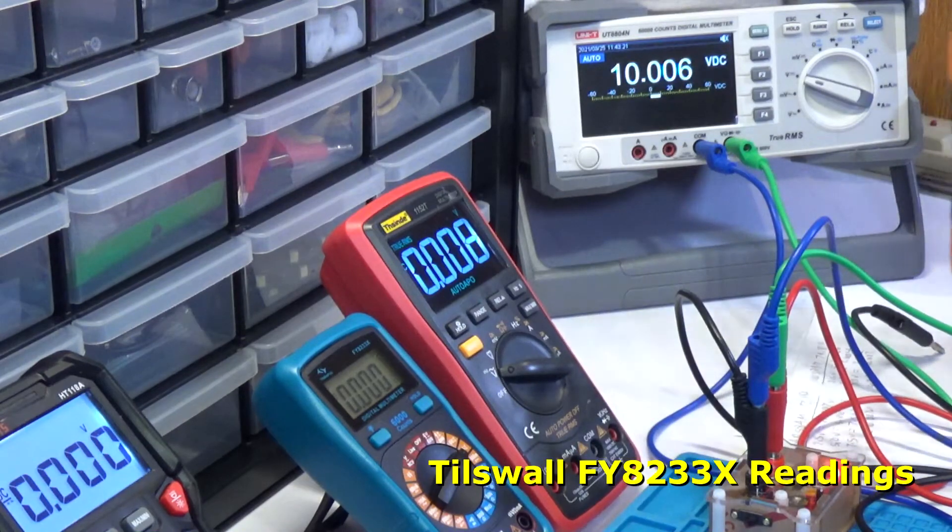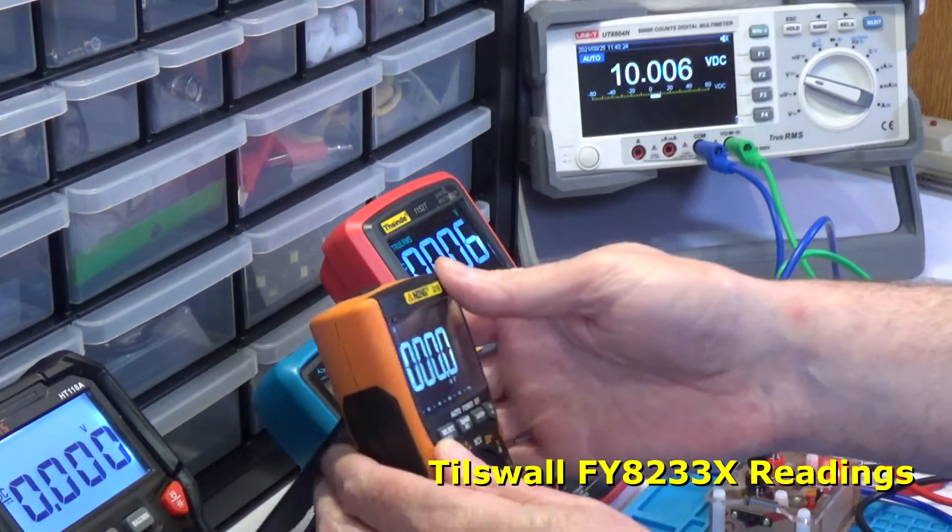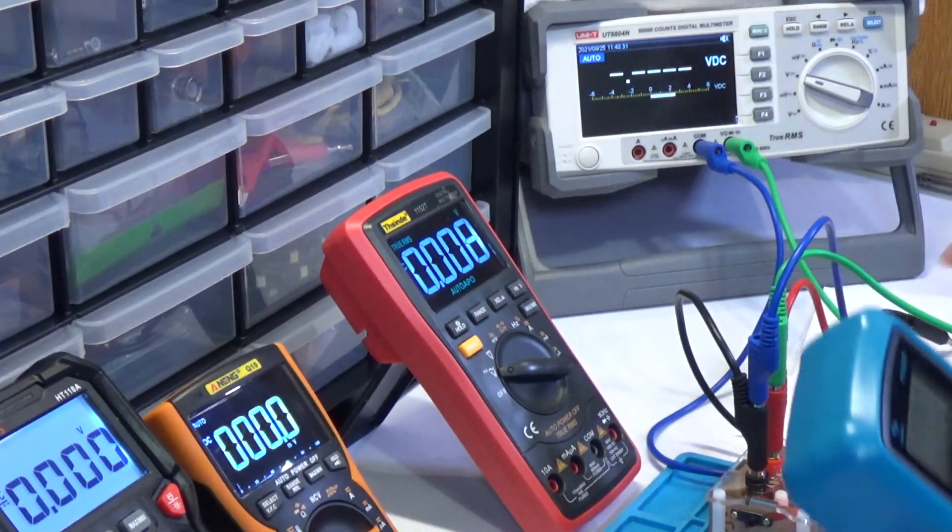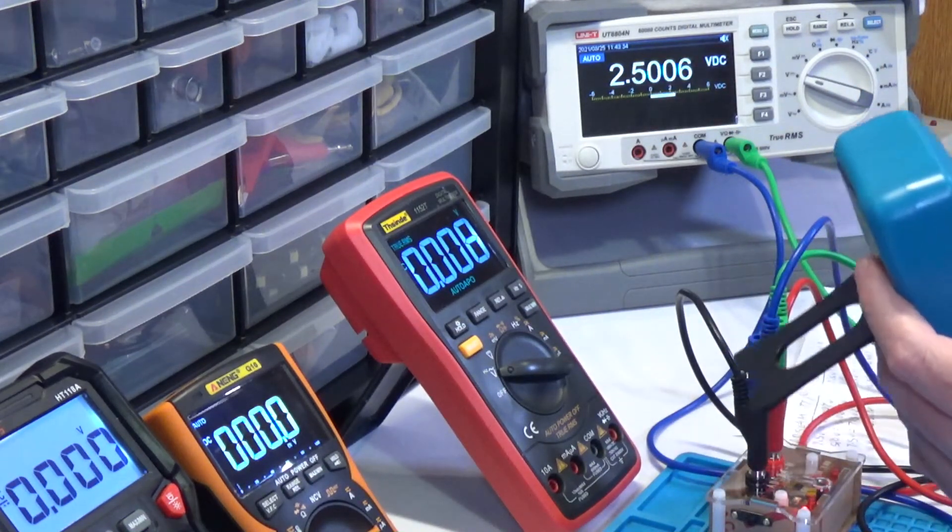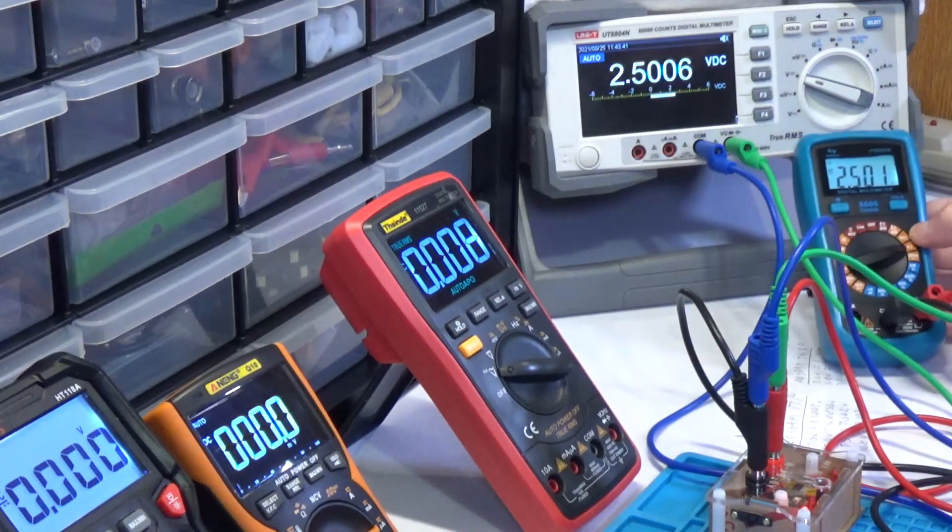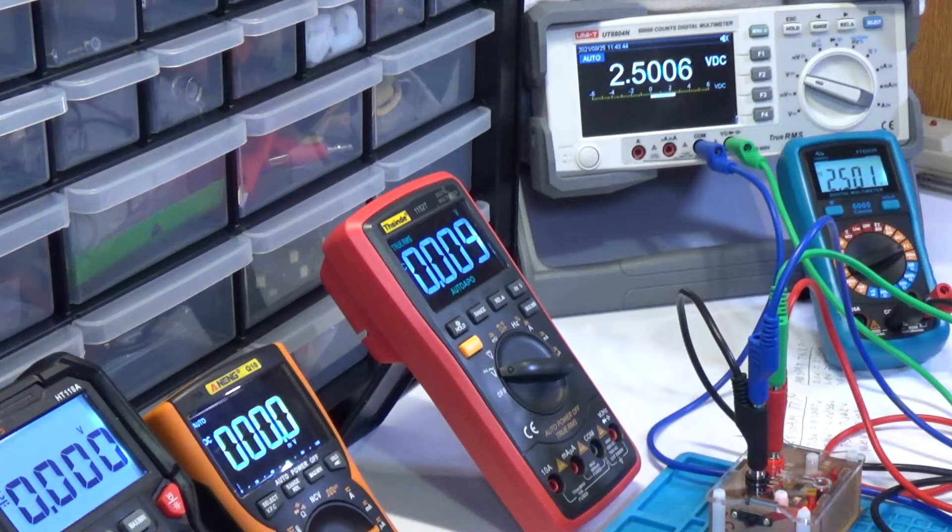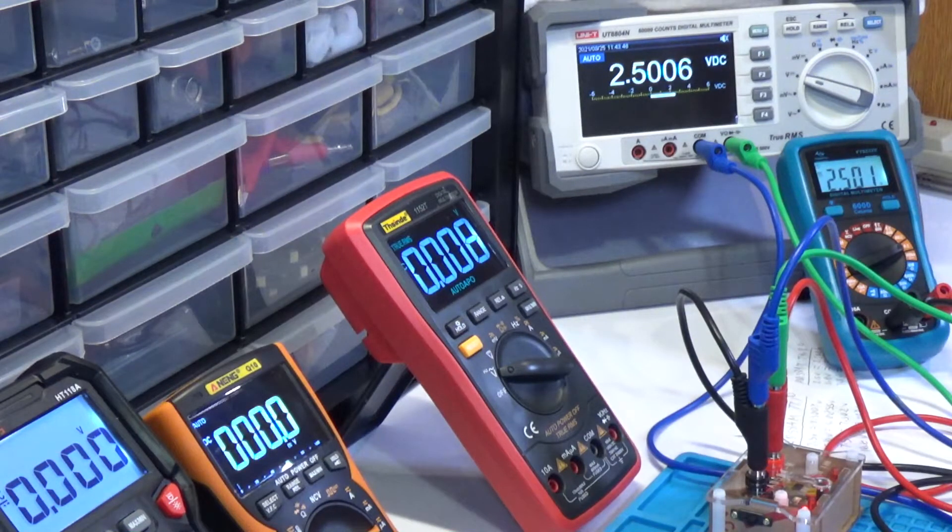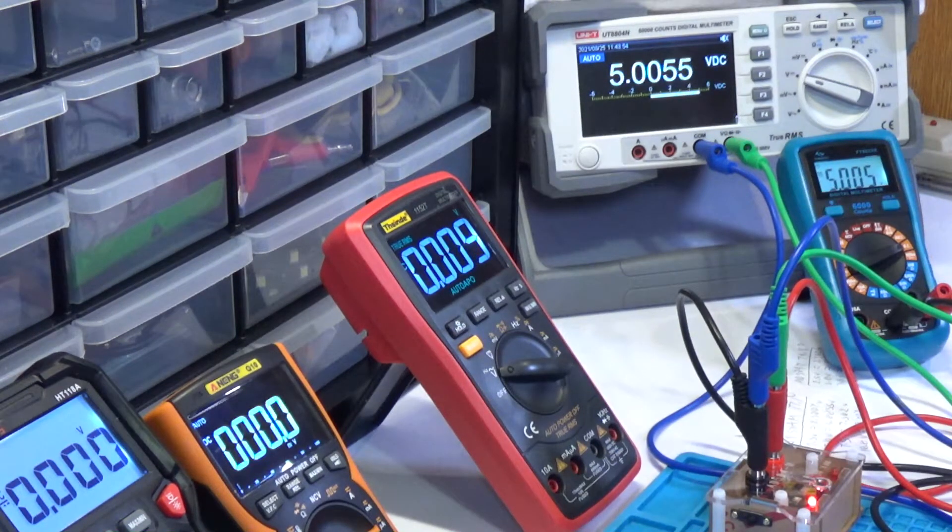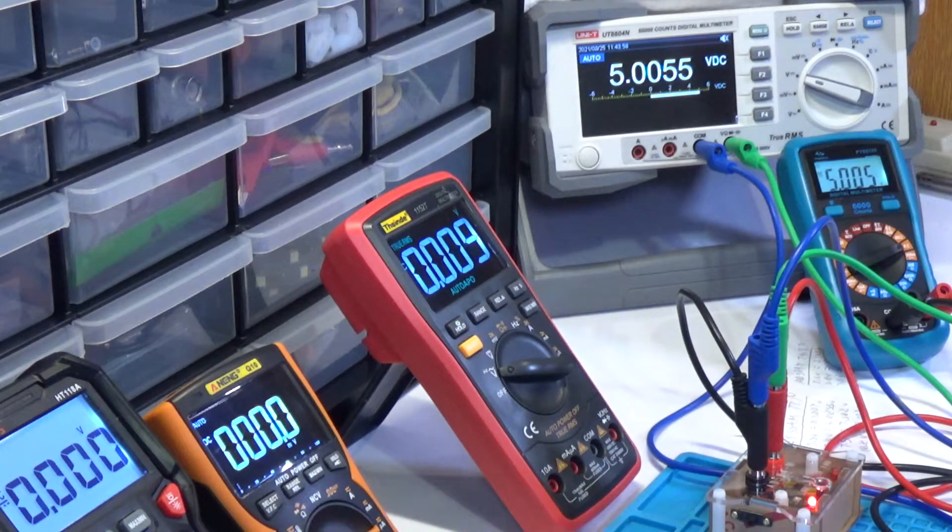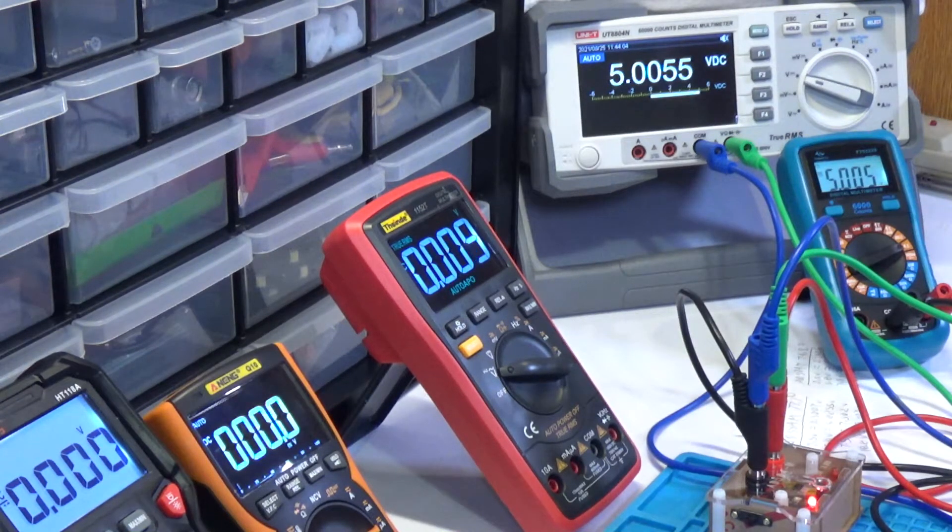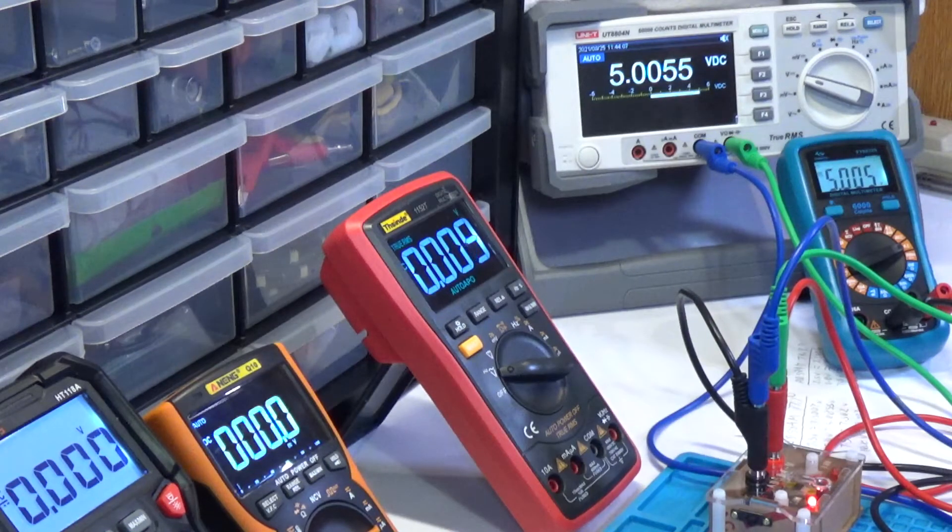Which is going to be the Tills Wall FY8233X. Let's get this back down to 2.5 volts and let's get the backlight on here. So for the 2.5 reading this is 2.501, that's exactly where it should be. For the 5 volt you're getting 5.005. Again, very, very close. I can't remember whether this one jumps up to 5.006 or not. I don't think it did. I tried these the other day just to see how they would do. But that's quite close.